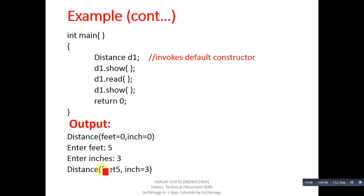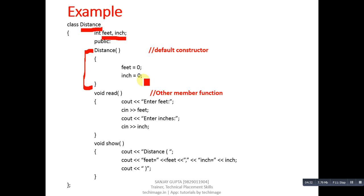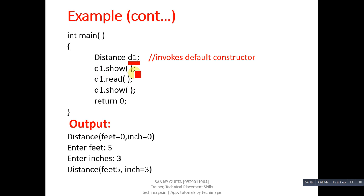In the main function, object d1 is created. Whenever you execute this program, d1 will require some amount of memory for storage, so the default constructor will be called automatically and will initialize zero to feet and inch. Then d1.show will print the values on console — feet equals zero and inch equals zero. Then d1.read will read values from the user, which are 5 and 3 here. Then d1.show will print those values again — feet 5 and inch 3 will be displayed on console. So when d1 object is created, the default constructor is called automatically and has initialized feet and inch to zero automatically.